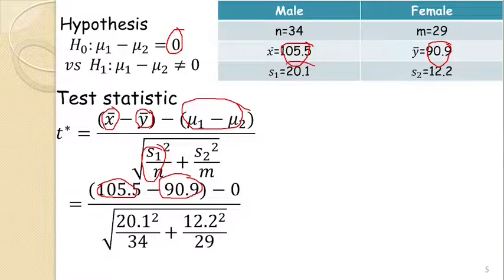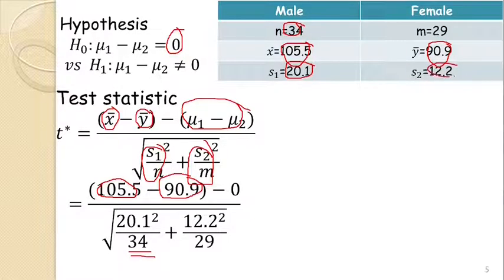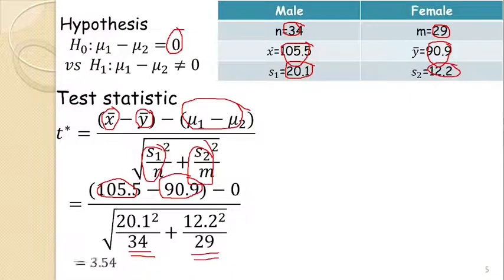s₁ = 20.1 and n = 34 — we place these values here. s₂ = 12.2 and m = 29, obtained from the female sample — we place these values as well. After simplifying, the value of T* comes out to be 3.54.